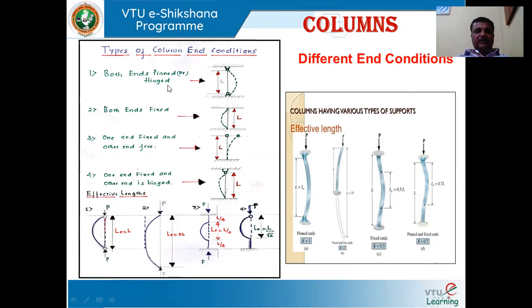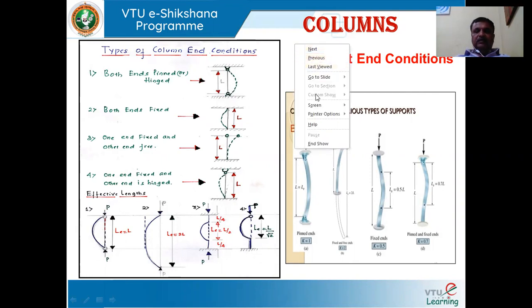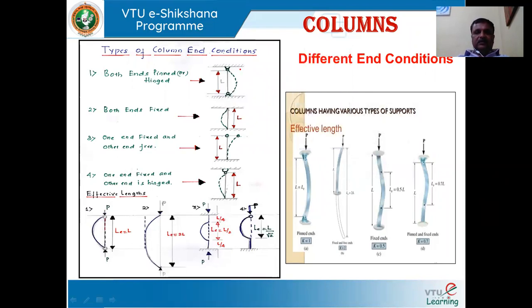You can see the different end conditions. The column is normally a vertical member subjected to compressive loads. When the load is applied, if the column buckles, then it is nothing but the failure of the column. So to avoid this buckling, we need to design the columns for safe operation.